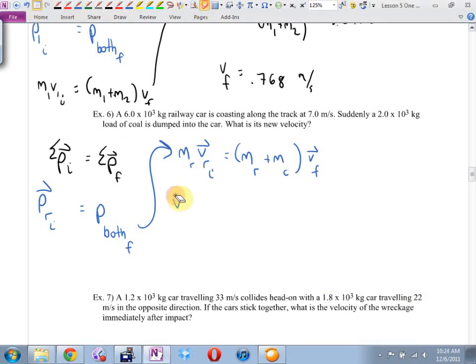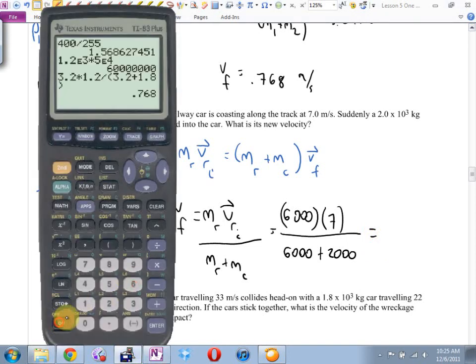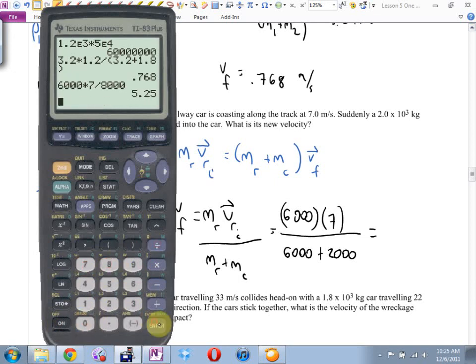V final is going to be mass of the railway car, velocity of the railway car initial divided by the mass of the railway car plus mass of the coal. It's going to be 6,000 times 7 divided by 6,000 plus 2,000. Do you get 5.25? Yeah. Meters per second.